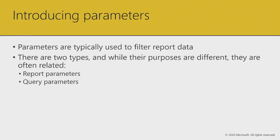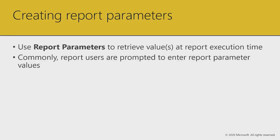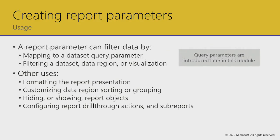Parameters are typically used to filter report data. The two types are report parameters and query parameters. Report parameters are used to prompt the user at report execution time. Users enter values, and as a report author you can map them to dataset query parameters. So when the report user filters by fiscal year 2019, that gets passed into the query statement and sent to the data store.